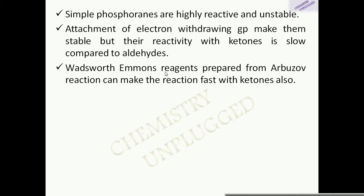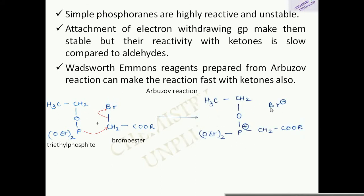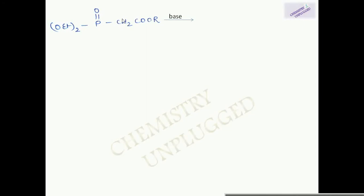For this purpose we use the Wadsworth-Emmons reagent. These reagents are prepared by the Arbuzov reaction. In the Arbuzov reaction we use triethyl phosphite, P(OEt)₃, along with a bromoester. The lone pair on phosphorus attacks the electron-deficient carbon, Br⁻ leaves, giving a positive charge on phosphorus. The lone pair on oxygen shifts to form a double bond, giving a positive charge on oxygen, and then that bond breaks to give the phosphonate product.